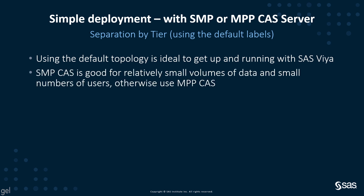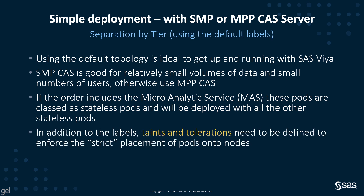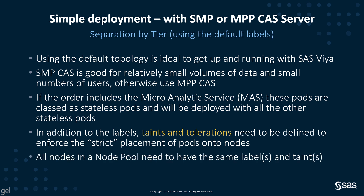The SMP CAS server is good for relatively small volumes of data and small numbers of users; otherwise, use an MPP CAS server. If the order includes the microanalytic service — such as a model manager or visual machine learning order — those pods are classed as stateless and would be deployed with the other stateless pods. In addition to labels, we can apply taints and tolerations, which need to be defined if we want to strictly enforce pod placement. All nodes in a node pool need to have the same labels and taints.